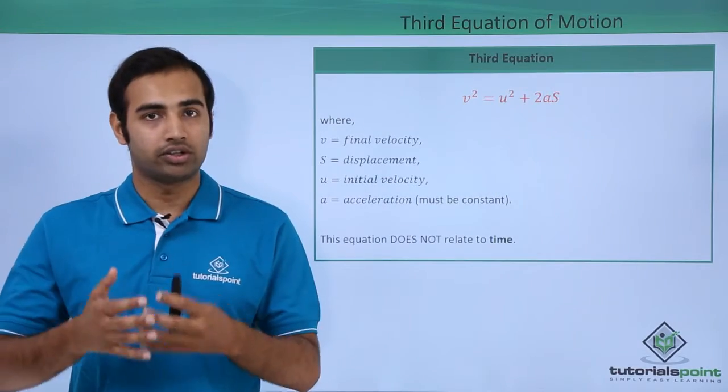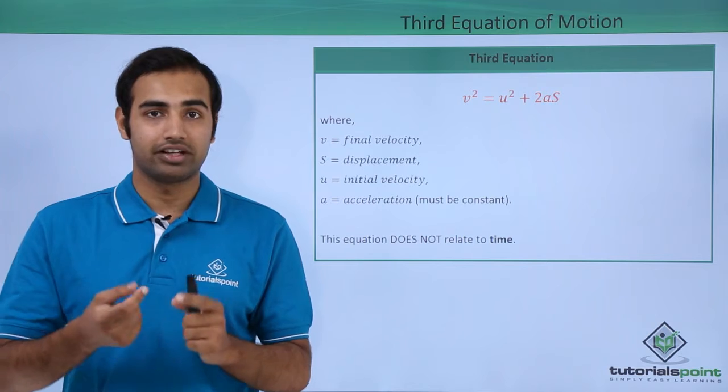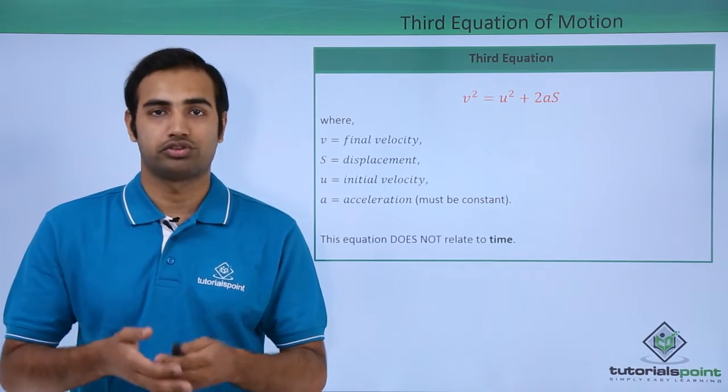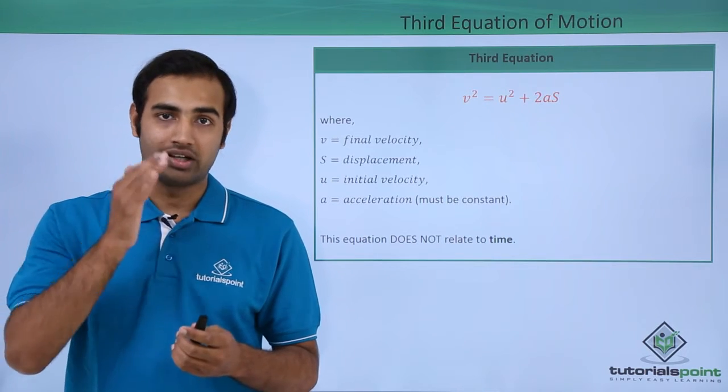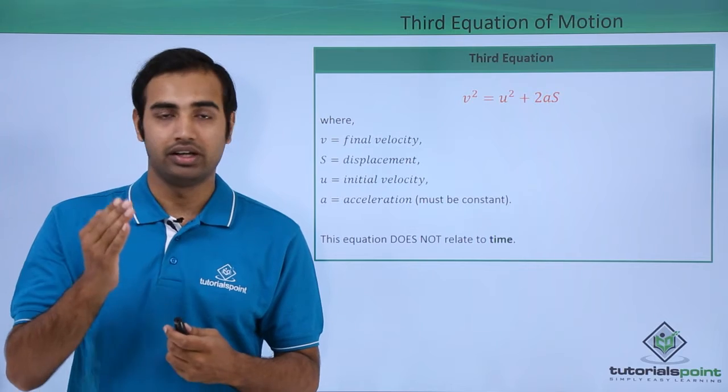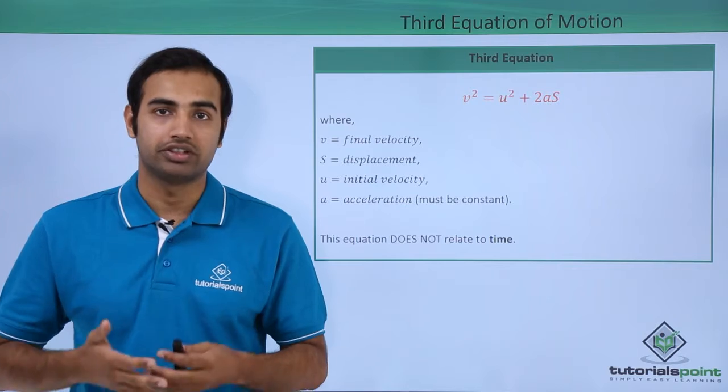Now in this equation, we are not talking about time. The variable time has been eliminated and we have relationship between initial velocity, final velocity, acceleration and displacement which is also change in position. So now you can see that in the first equation, we did not have any mention of displacement, in the second equation we did not have any mention of final velocity, in the third equation we do not have any mention of time.